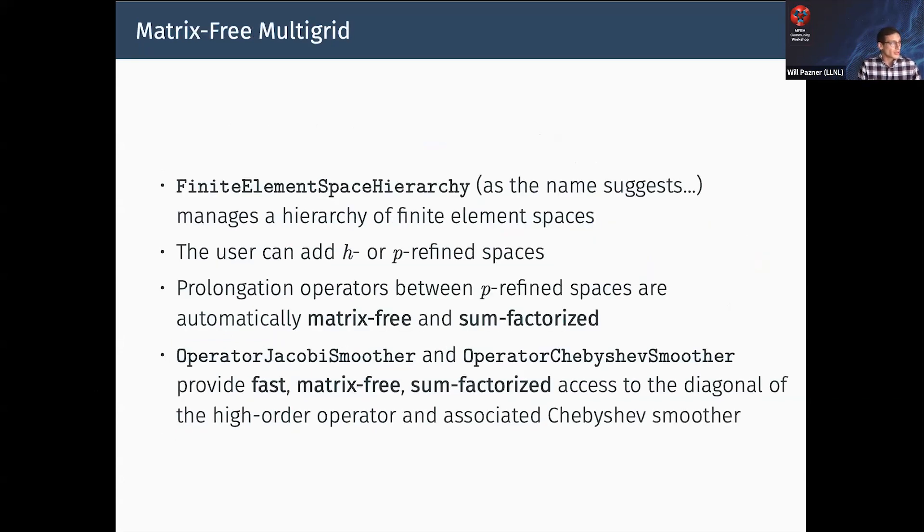If you use this geometric multigrid, you construct a finite element space hierarchy - it's an object that we provide. This will build for you the prolongation operators; you don't need to provide them. These are automatically matrix-free and sum-factorized and work on the GPU. For smoothers, you choose which smoother you want. We have Jacobi, which works matrix-free - you assemble the diagonal without assembling the matrix, it's sum-factorized to avoid bad scalings with p. We also have Chebyshev acceleration.